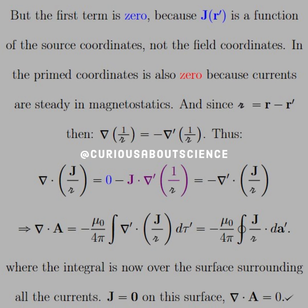but we get negative mu 0 over 4 pi, contour integral of j over r dotted with dA prime. And since this now tells us that we have an integral over the surface surrounding all the currents, we know that in this scenario that j is equal to 0 on the surface. Therefore, this whole thing via the divergence theorem must equal 0.